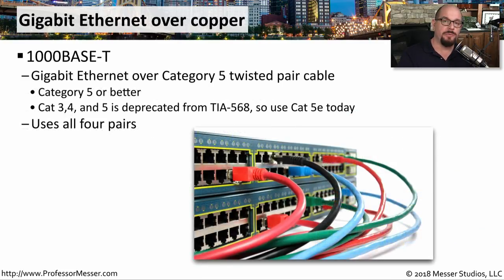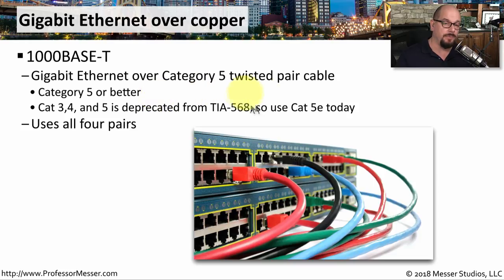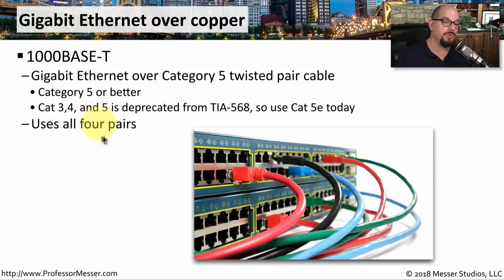Moving up from 100 megabit Ethernet, we move into gigabit Ethernet, or 1,000 megabit. The standard for gigabit Ethernet that most people are using is 1,000BaseT. 1,000BaseT runs over category 5 twisted pair cable or better. If you look at the EIA-TIA standards, you'll see that category 3, 4, and 5 cable is deprecated, so usually the minimum cable you'll find available to run for 1,000BaseT is category 5e. And instead of using two pairs, 1,000BaseT requires all four pairs inside of that twisted pair cabling.